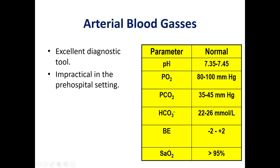CO2 has a great impact on pH because when water in the blood combines with CO2, it forms an acidic compound. So the removal of CO2 and supply of oxygen helps in controlling our pH within the range of 7.35 to 7.45.